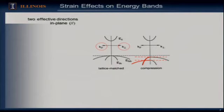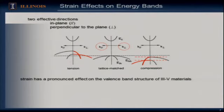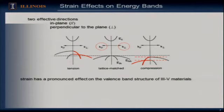There is a companion case: tension in the plane gives compression in the perpendicular direction, and symmetry argues the changes are the symmetric mirror of the compressive case — mother nature drives towards symmetry. So strain has a pronounced effect on the valence band structure of III-V materials. In particular, it removes a degeneracy — interesting but not so important — but changes in the effective masses are the key feature that has such a strong impact on semiconductor lasers.